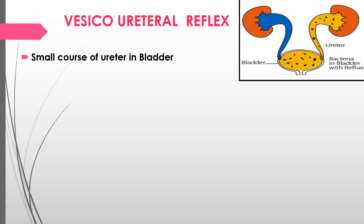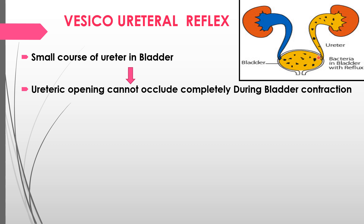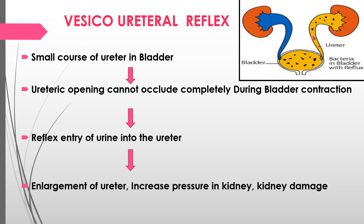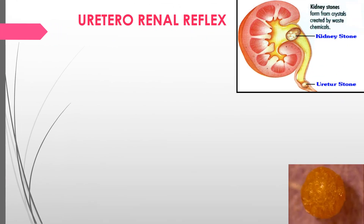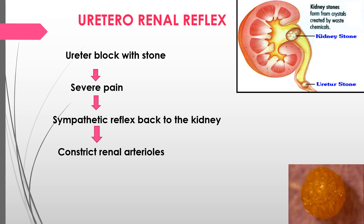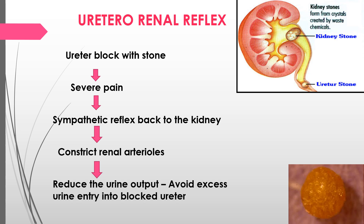The vesicoureteral reflex occurs when a short course of ureter in the bladder causes the ureteral opening to not occlude completely during bladder contraction, allowing reflex entry of urine into the ureter, causing ureteral enlargement, increased pressure in the kidney, and potential kidney injury. The ureterorenal reflex occurs when a calculus in the ureter causes obstruction and severe pain; a sympathetic reflex back to the kidney constricts the renal arterioles, reduces renal output, and prevents excess urine entry into the blocked ureter. This is a protective reflex.